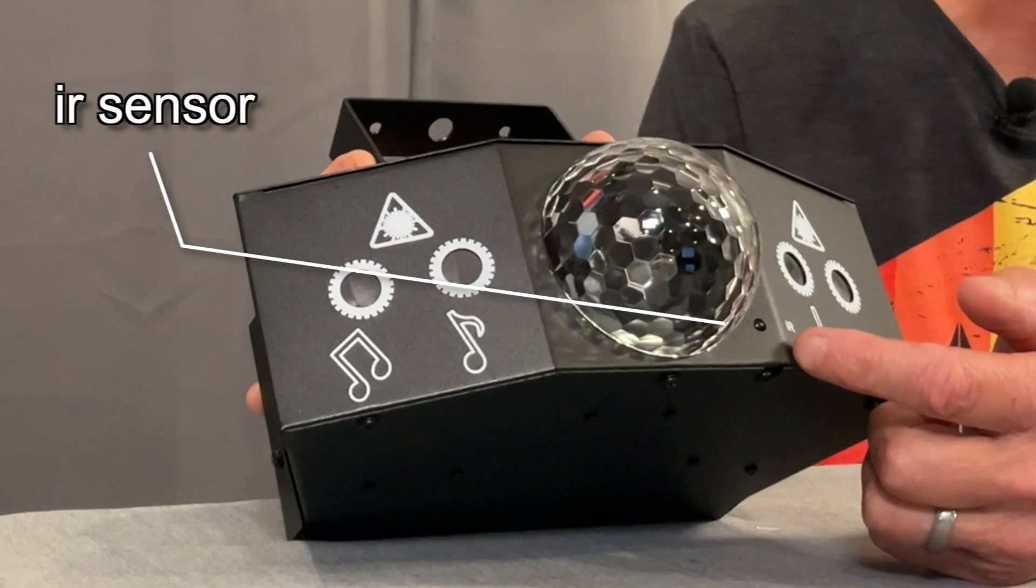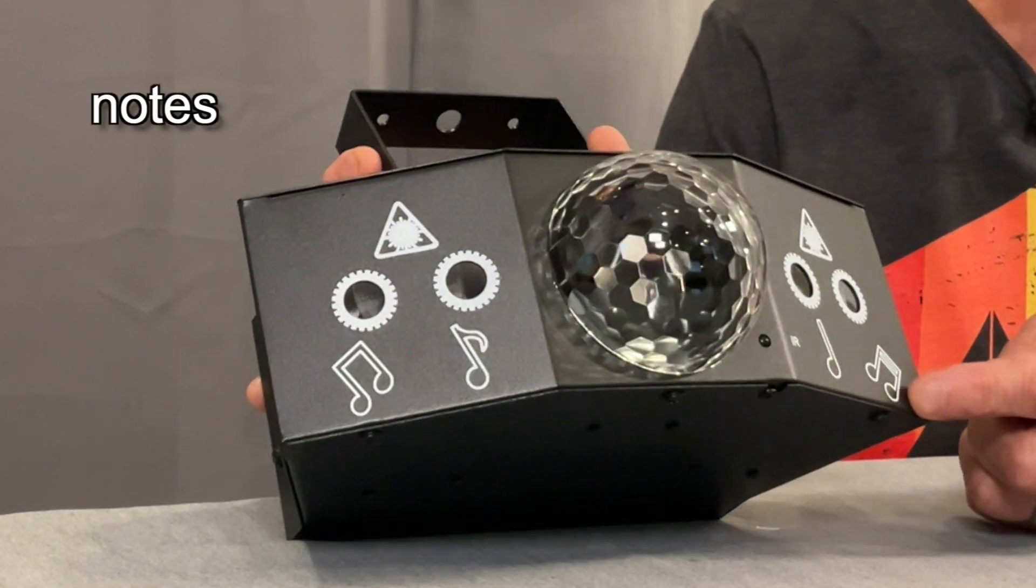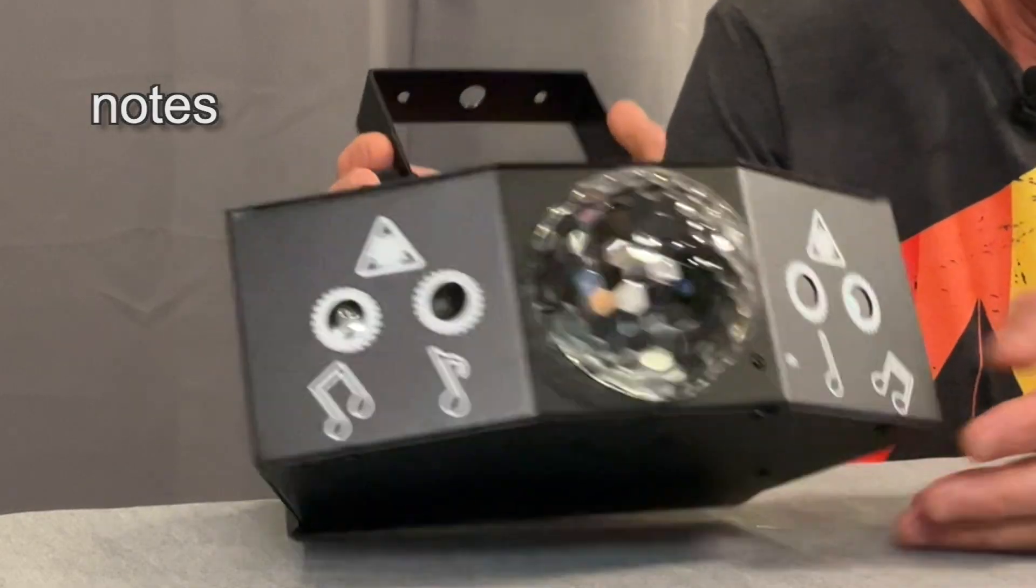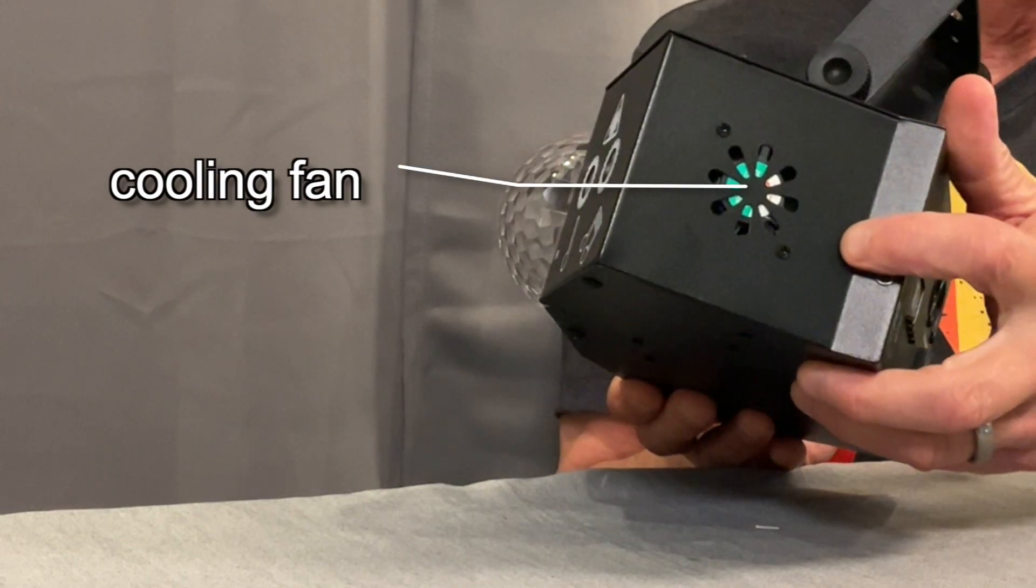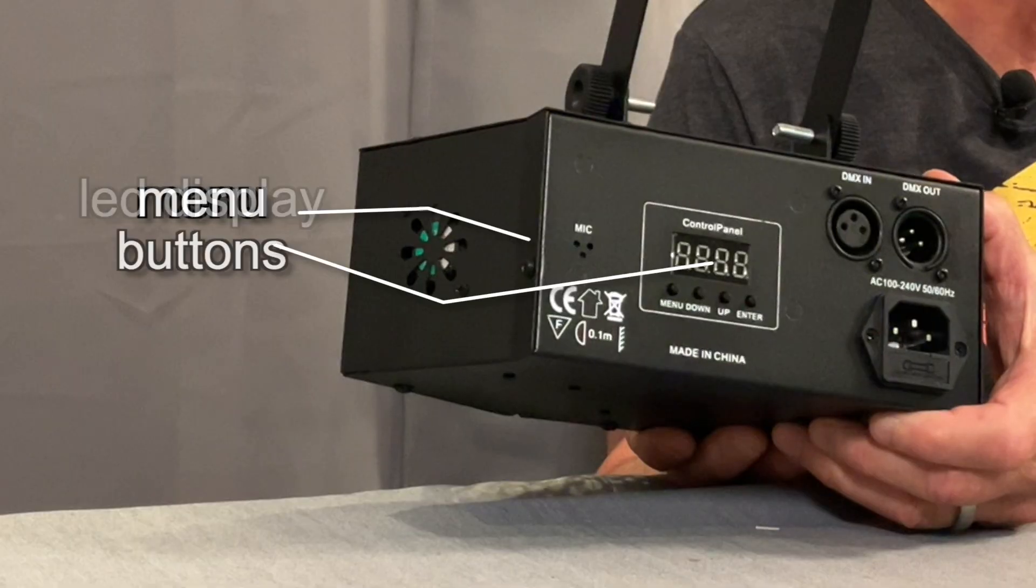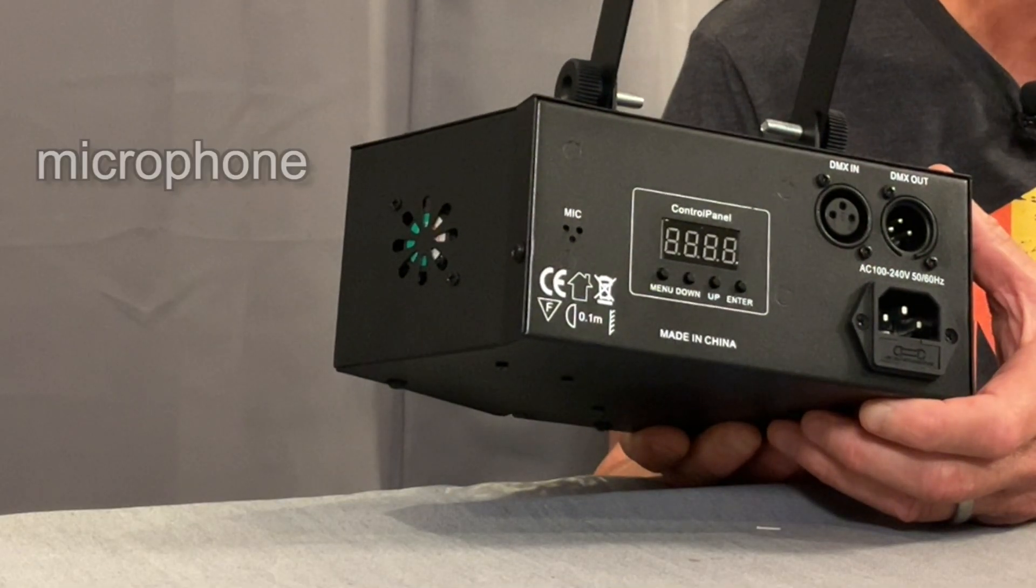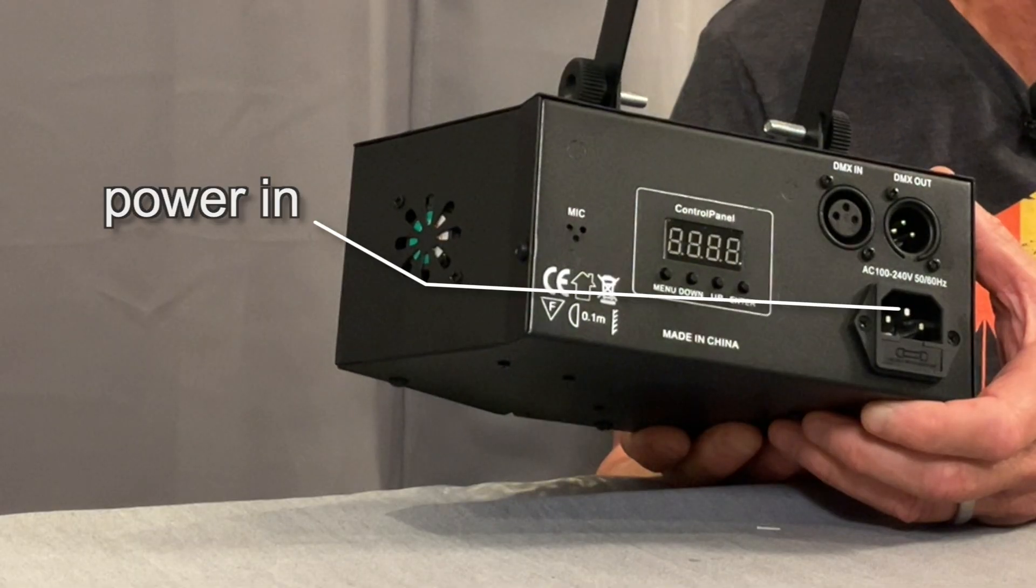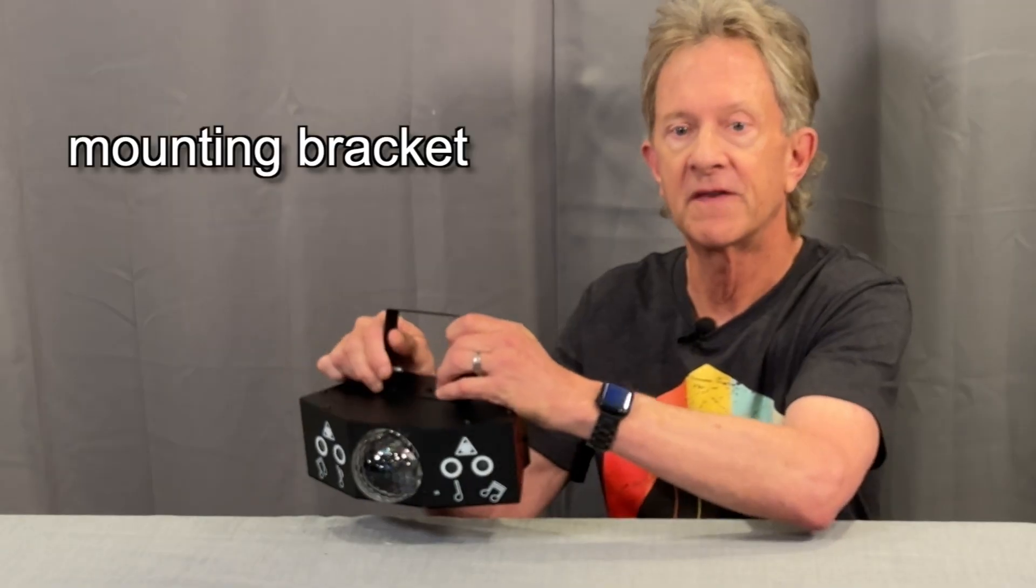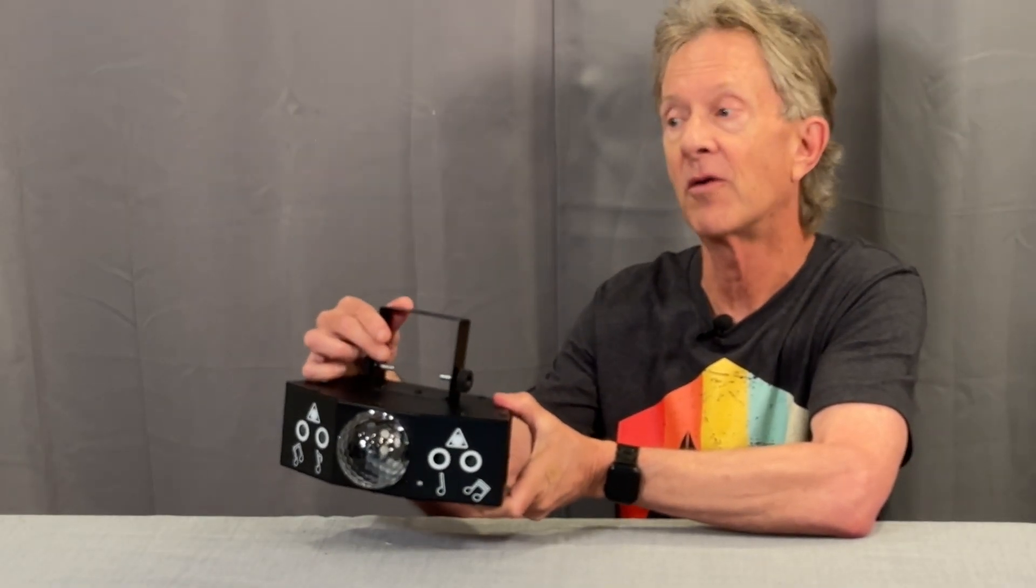Here's the IR sensor for the remote. You also get these very professional looking big white music notes that are painted on. There's a little cooling fan on the side and on the back there's an LED screen and menu control buttons, a microphone for the sound active mode, power in jack and DMX in and out jacks. And on the top it comes with this adjustable mounting bracket for hanging it on your T-bar or truss.